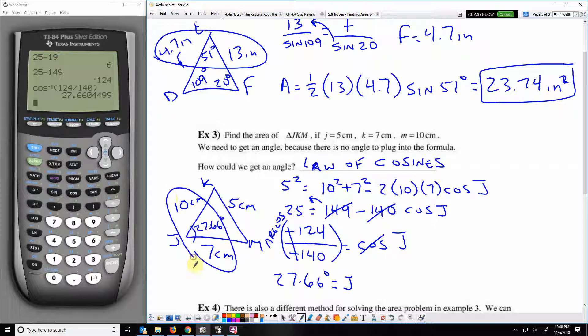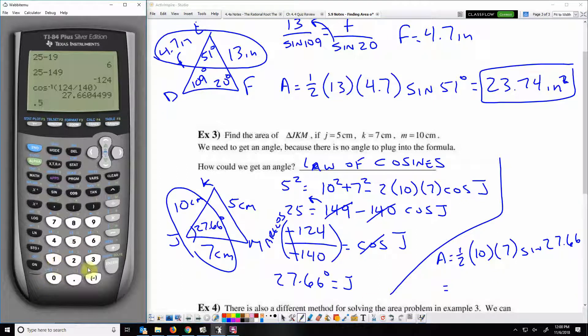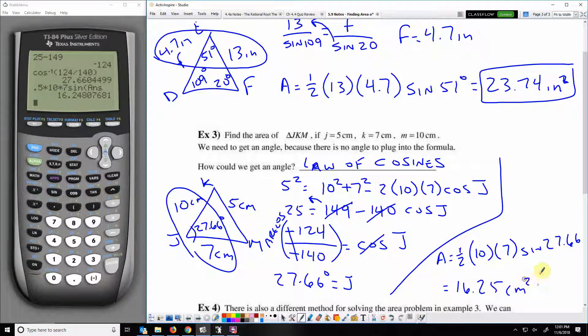I've got angle J at 27.66 degrees. Now I've got side-angle-side. I can do area equals 1 half times 10 times 7 times sine 27.66. Instead of putting in 27.66, I could put in this entire decimal just by using the previous answer. Second and negative puts in the previous answer. It might be a little bit more accurate that way. I get about 16.25 centimeters squared.